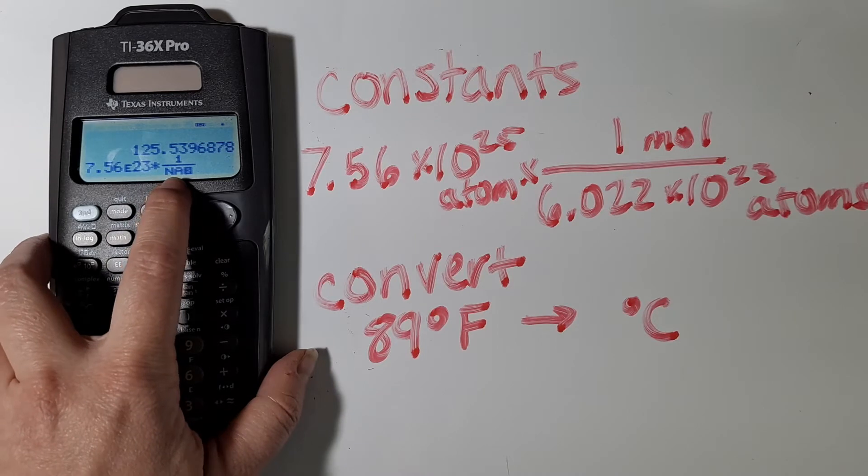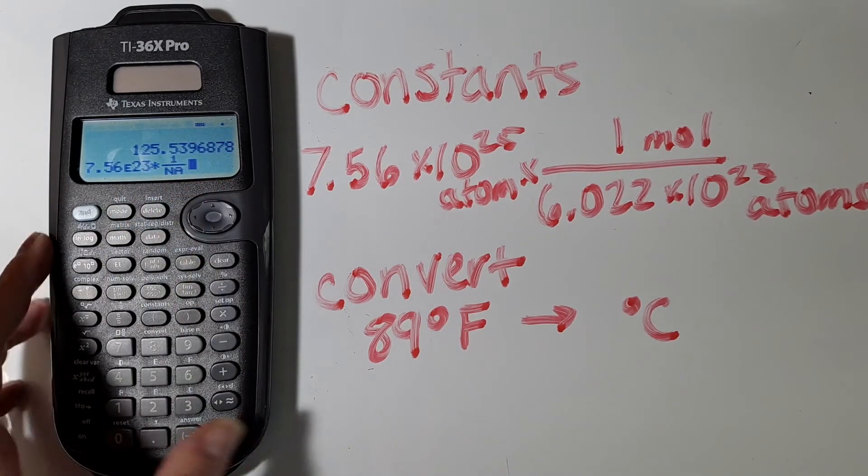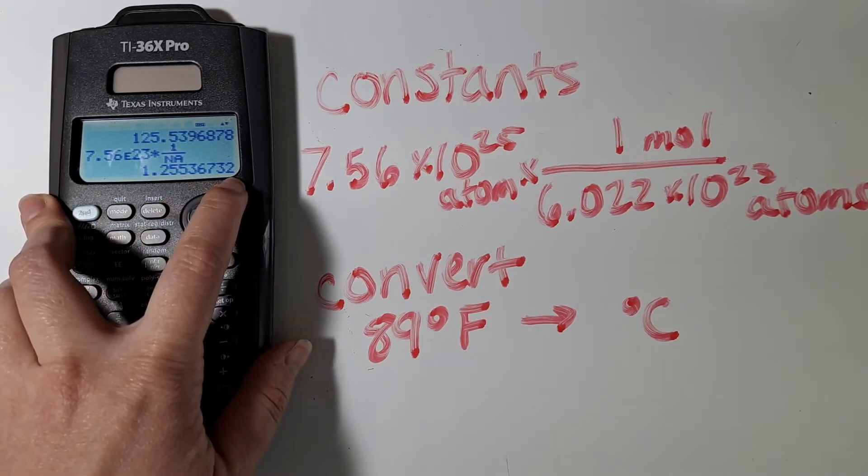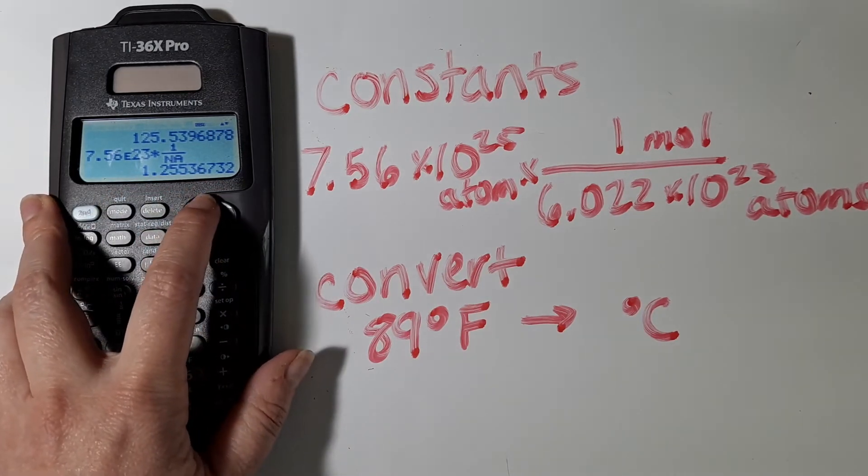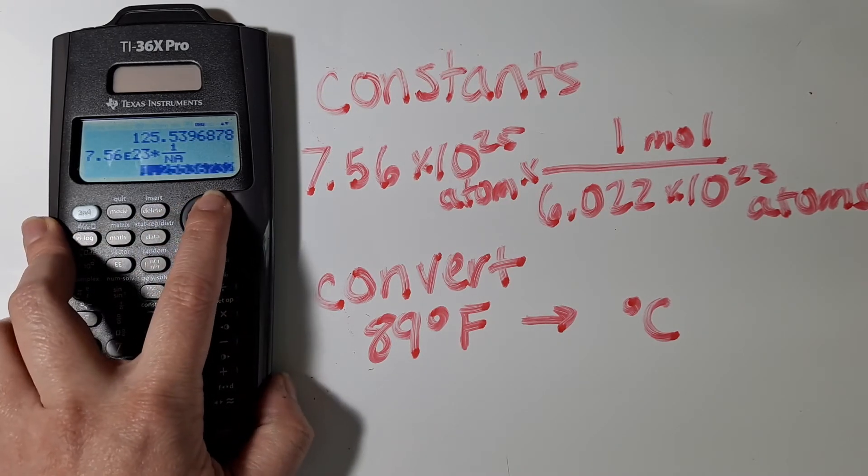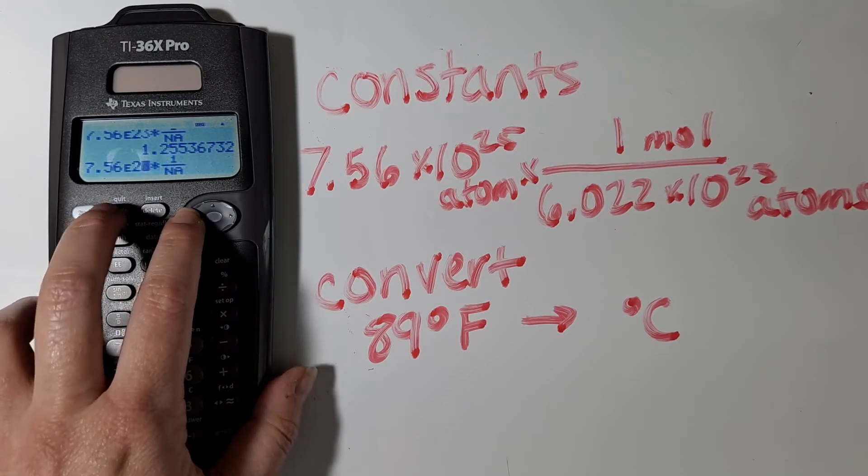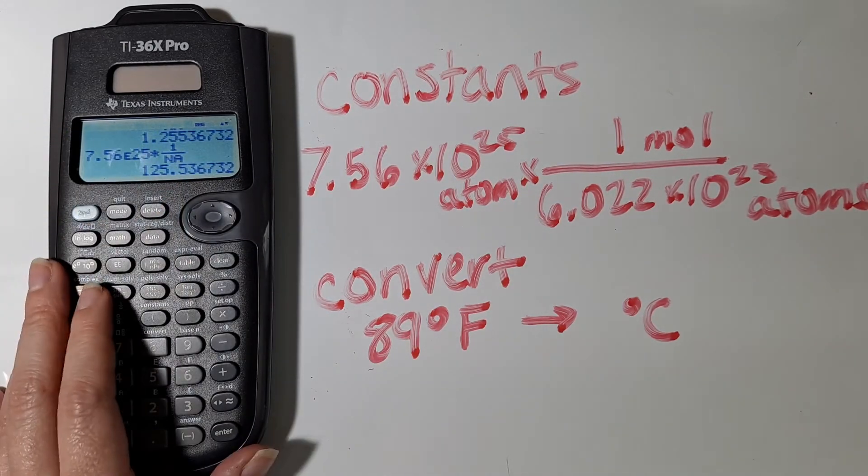And you can see it brought down N-A, which is what Avogadro's number is called. And so here we got our answer. That answer differed from my previous answer, because I typed in 23rd instead of 25th. So there we go.